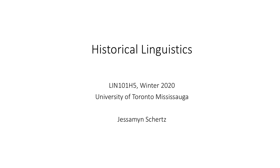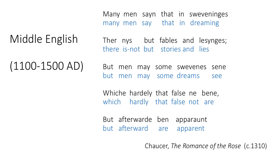Hi everyone. This lecture is going to be about historical linguistics. First, I want you to take a look at this passage from Middle English. You can see the Middle English in black and then the Modern English gloss in blue. It's from Chaucer, and Middle English was around from about 1100 to 1500 AD.